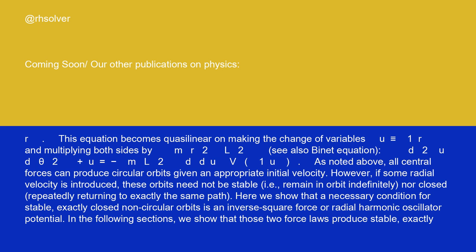This equation becomes quasilinear on making the change of variables u is identical to 1/r and multiplying both sides by m r²/L². See also Binet equation: d²u/dθ² plus u equals minus (m/L²) (d/du)V(1/u).